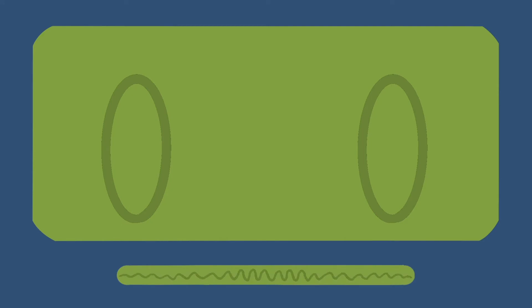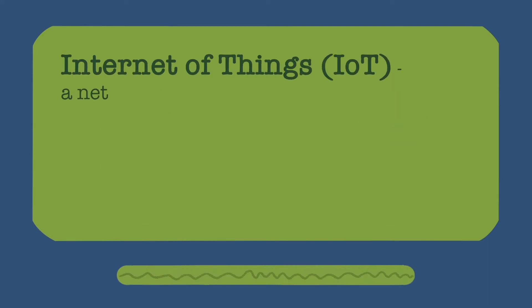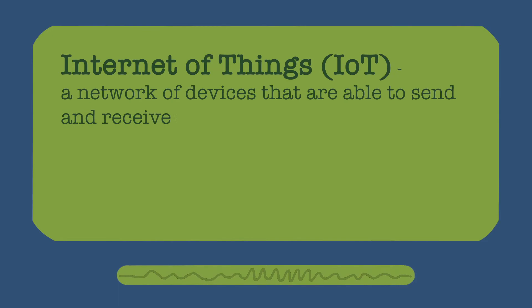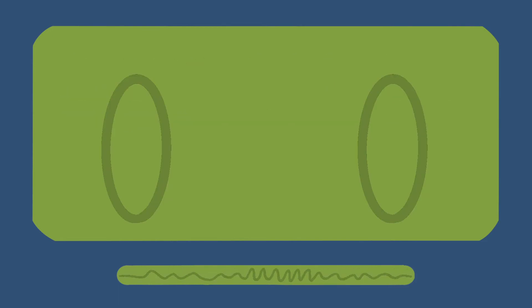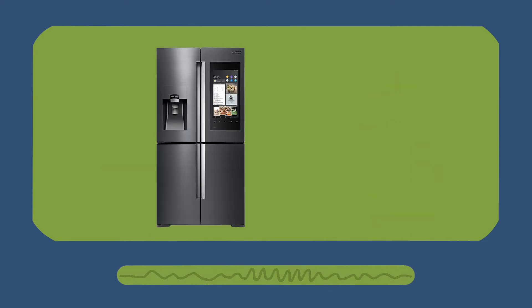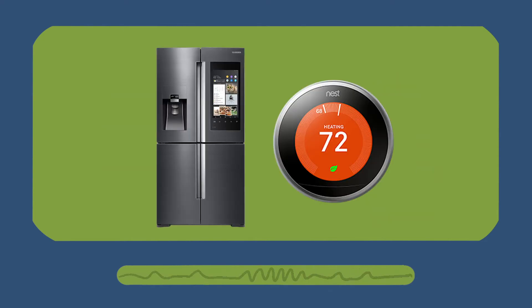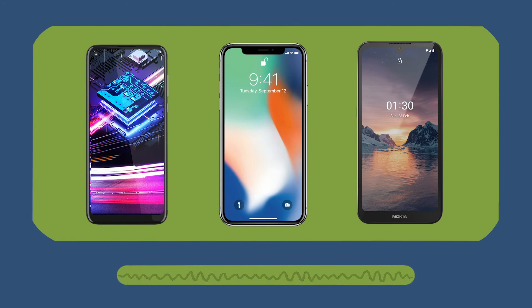IoT, which stands for Internet of Things, is our final main tech category today. IoT is a network of devices able to send and receive data via the internet. IoT technology connects to Wi-Fi to communicate and send signals to other Wi-Fi-connected devices. Many of these gadgets are labeled as smart devices — such as smart fridges, smart thermostats, and most familiar of all, smartphones.